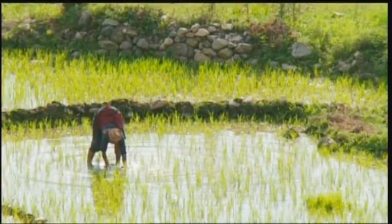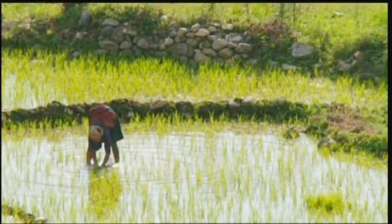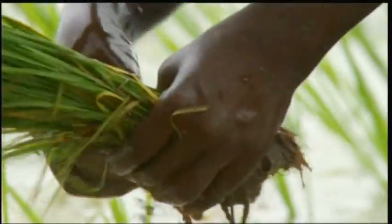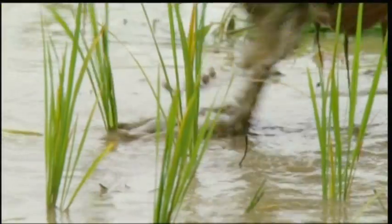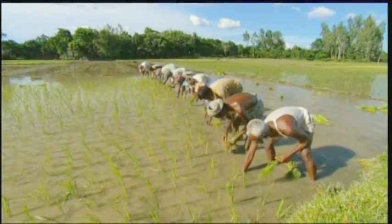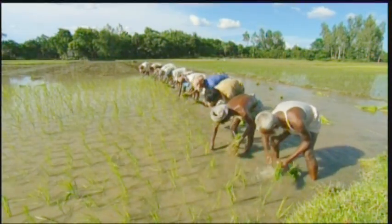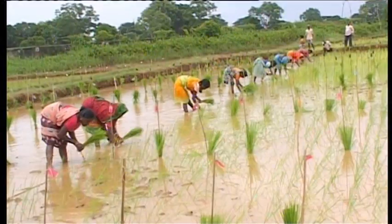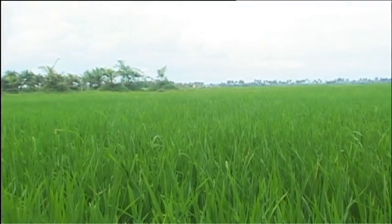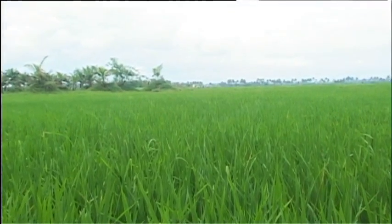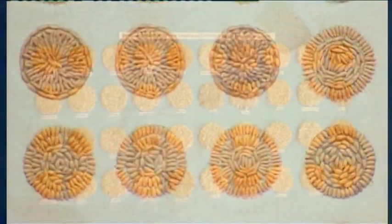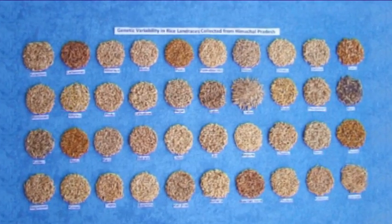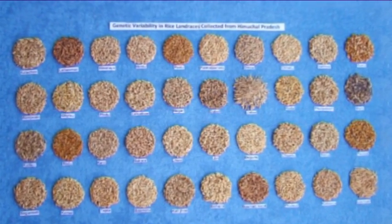We all know that these items are made from one crop, that is rice. But do you know that there are nearly 40,000 named landraces of rice only in India, which differ in texture, size, shape, colour, aroma and most importantly in taste.